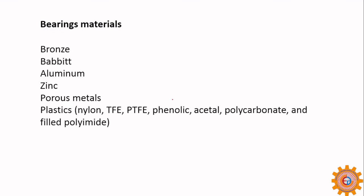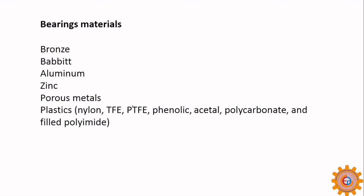Regarding bearing materials, in journal bearings the most prominent materials are bronze and babbitt. For crankshaft applications we use babbitt-type material; for loose applications we use aluminum and zinc. Bronze includes gunmetal (GM) and brass. Other materials include porous metals, Teflon, phenolic, acetone, polycarbonate, and other plastics. Nowadays Teflon sheets are also commonly used.